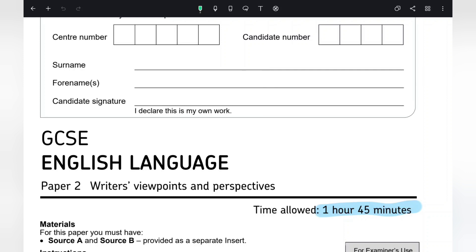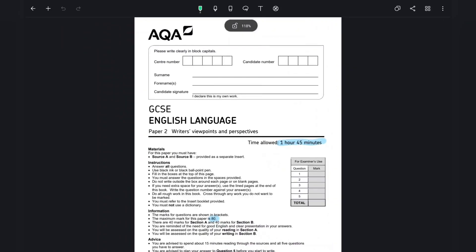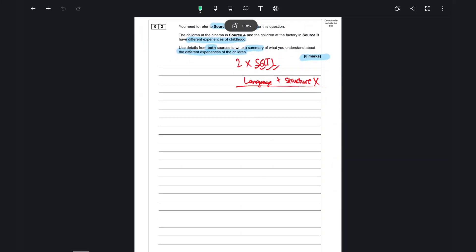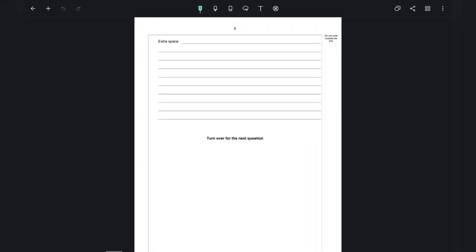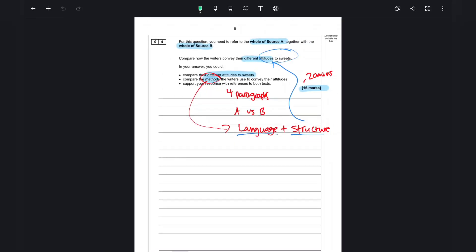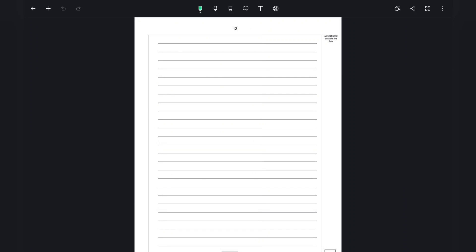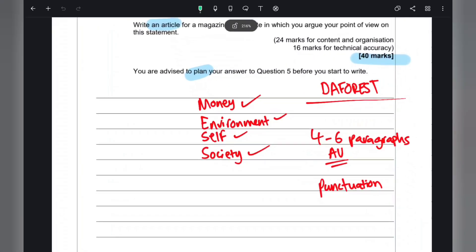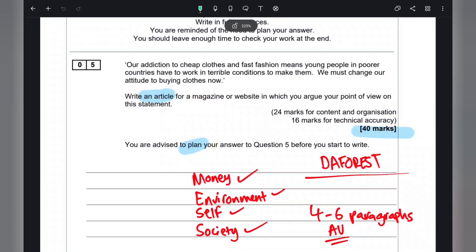Many of my own students have asked: do I start with Section A or Section B? My personal advice is to start with Section B. The reason is that Section B Question 5 is the most important question—it's worth 40 marks.